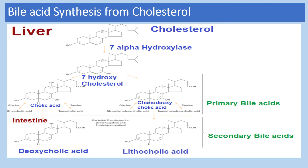In bile, a viscous fluid produced by the liver, the conjugated bile acids form sodium and potassium salts known as bile salts: sodium taurocholate, sodium glycocholate, sodium glycochenodeoxycholate, and sodium taurochenodeoxycholate. These bile salts are very important for the emulsification of fat as well as for digestion and absorption of fats and fat-soluble vitamins.